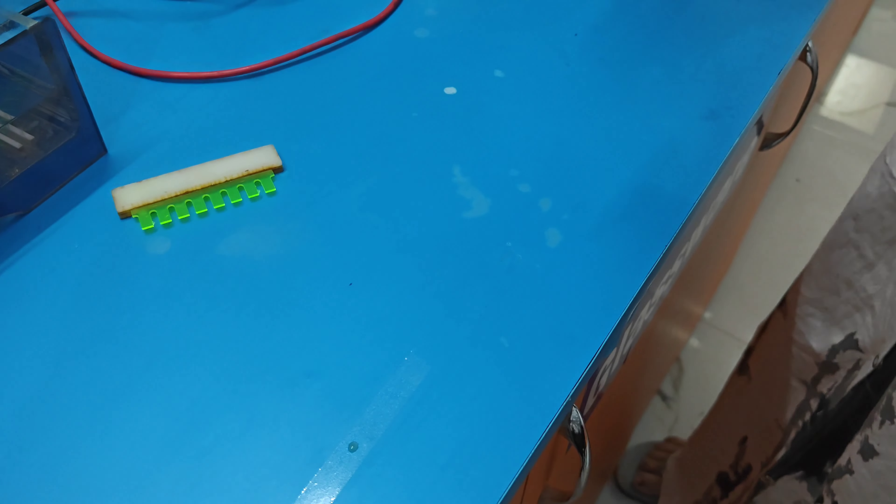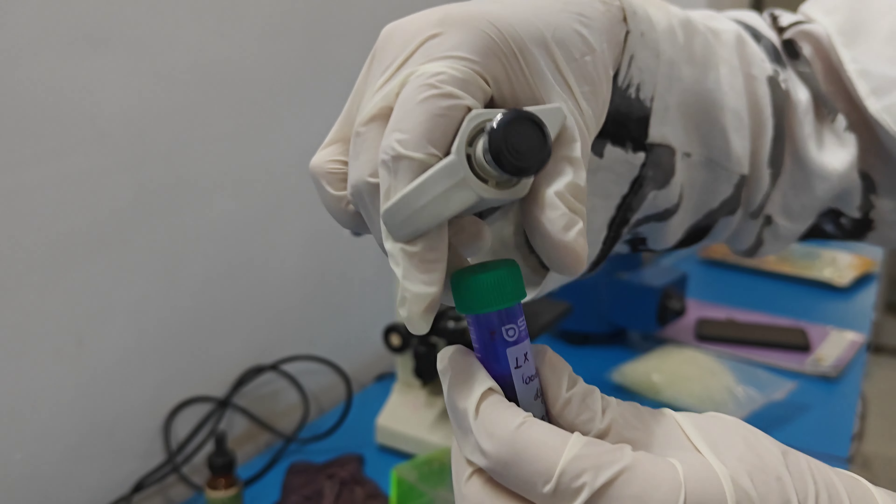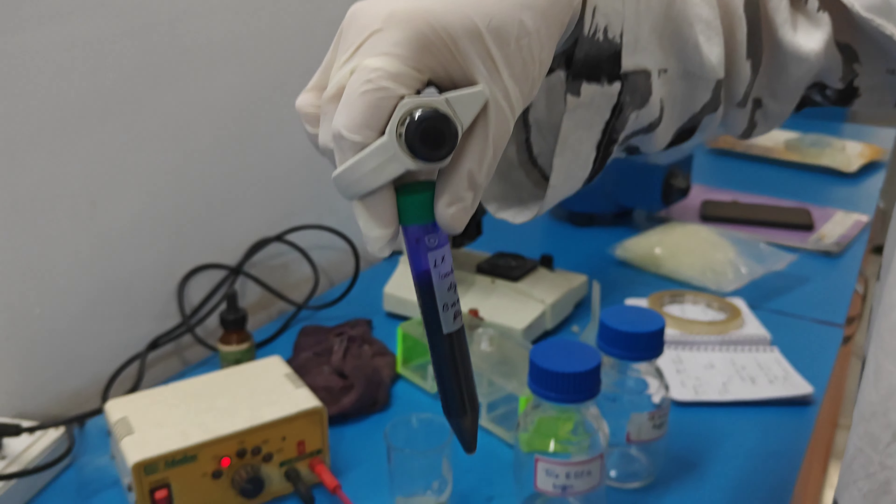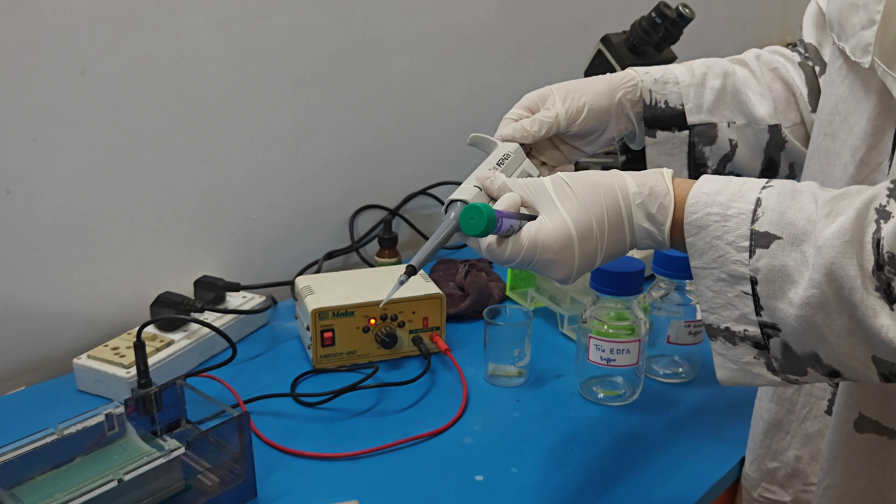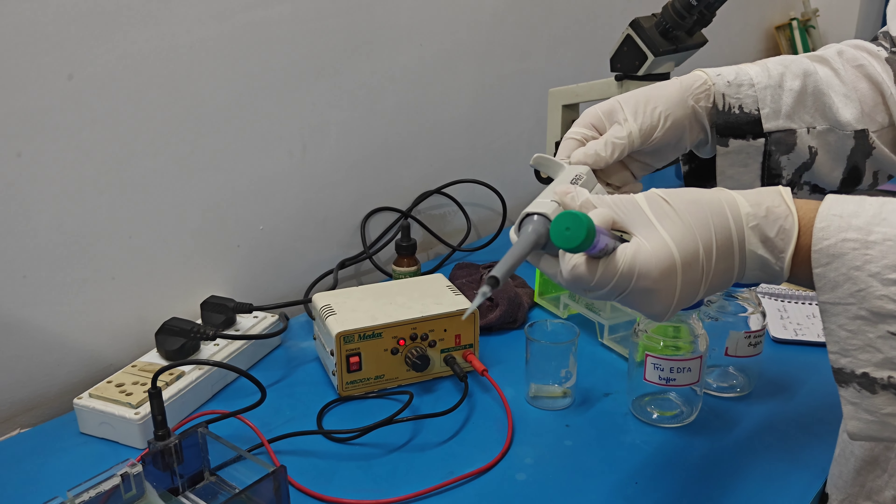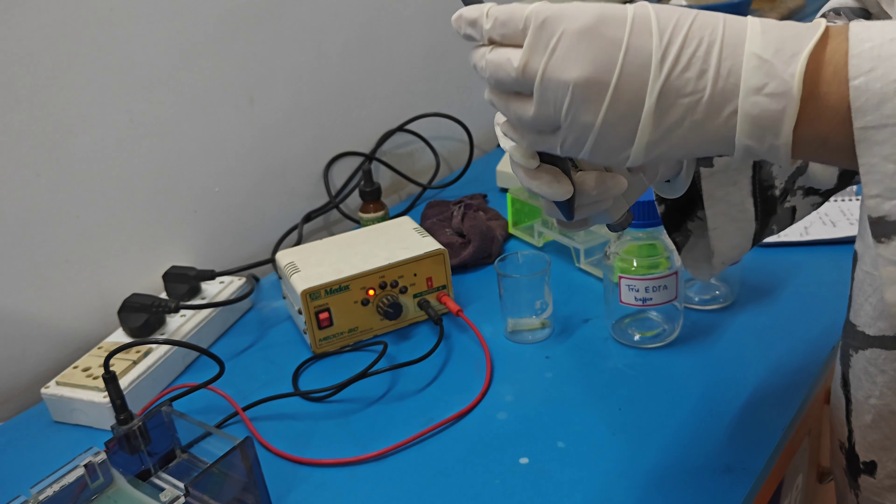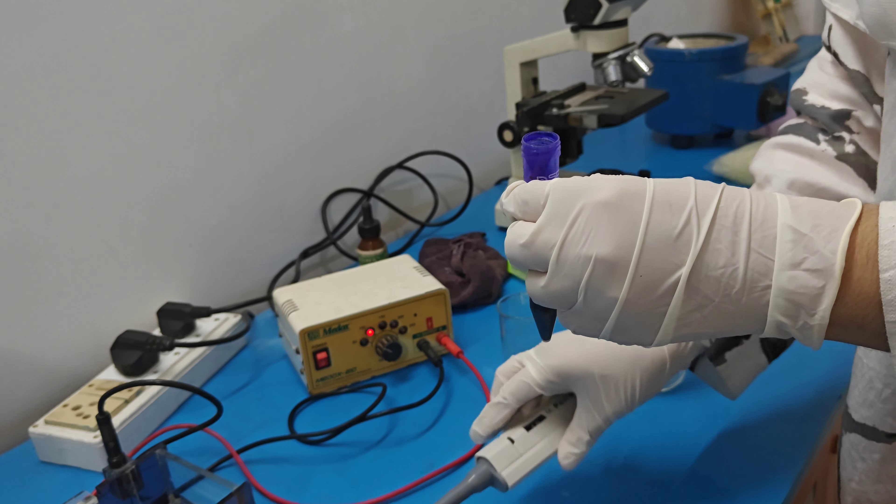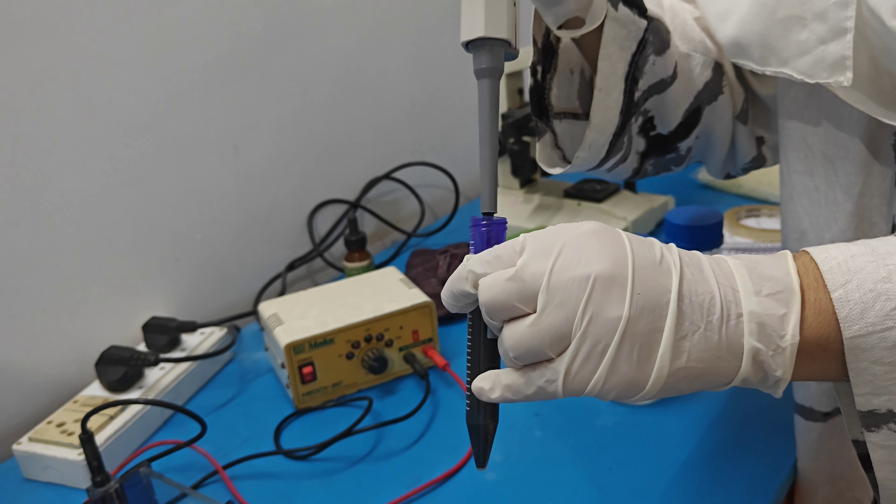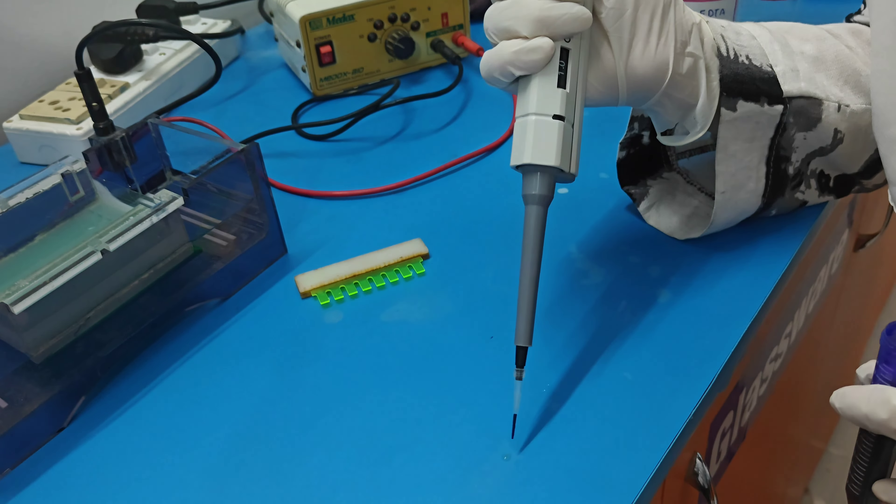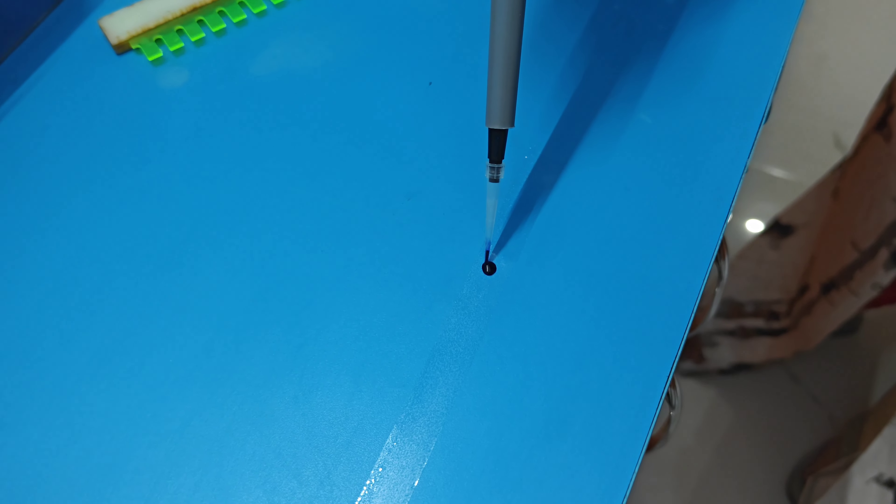Now after that we take bromophenol blue dye, it is a loading dye which is used for the visualization of the DNA because DNA is white color, it is not visible without the loading dye. We take 1 microlitre loading dye and drop the loading dye where you already dropped the DNA sample.